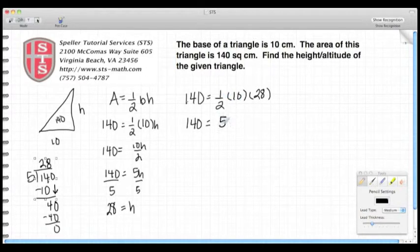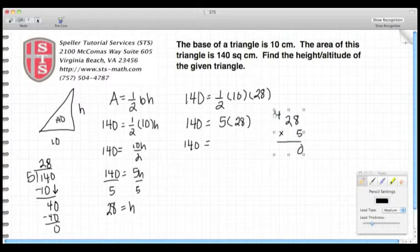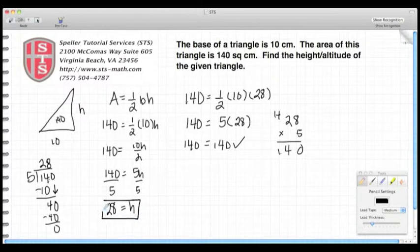Rewrite the 140, and we're going to begin to evaluate. One-half times 10 is 5, and we have 5 times 28. We need to evaluate that, and we'll do the long multiplication over here. 8 times 5 is 40. 5 times 2 is 10, plus that 4 is 14. So we see in fact that we are correct: 140 equals 140. So the height of this triangle is 28 centimeters.